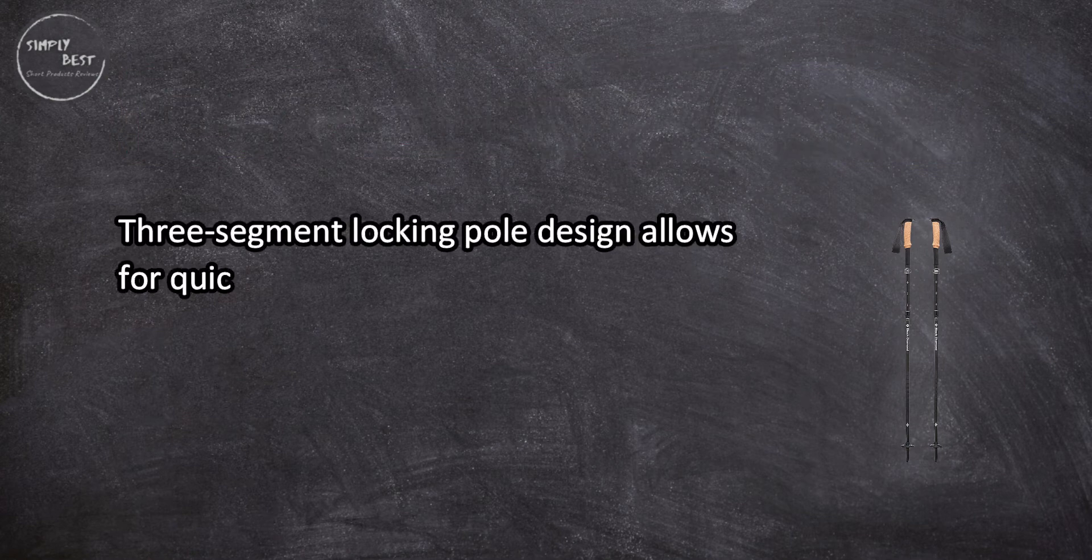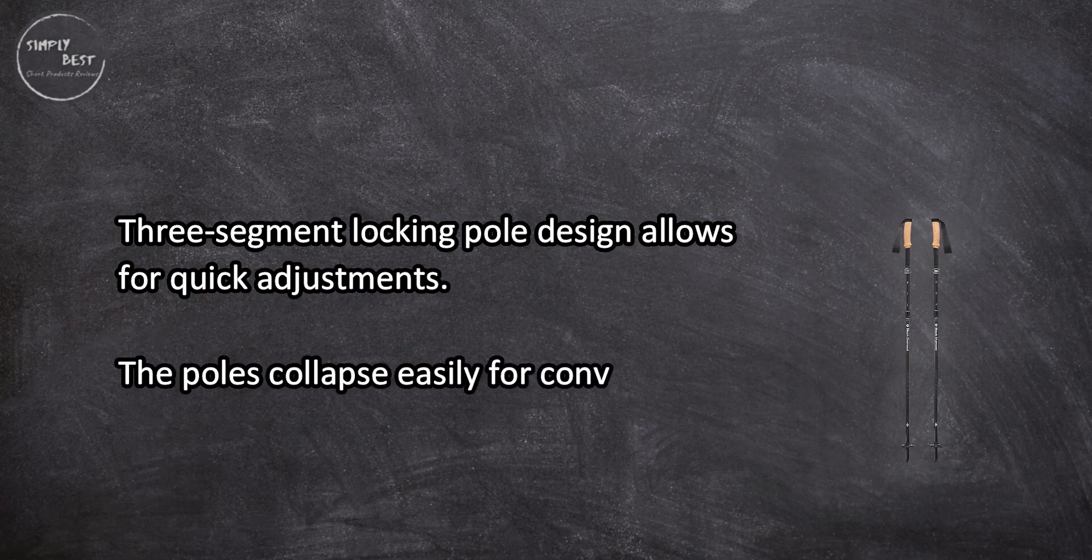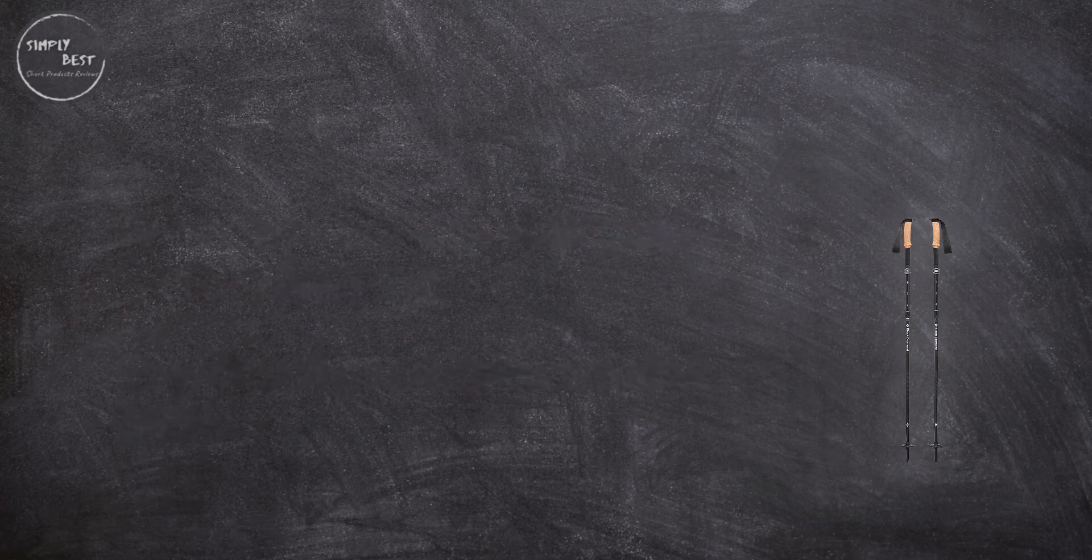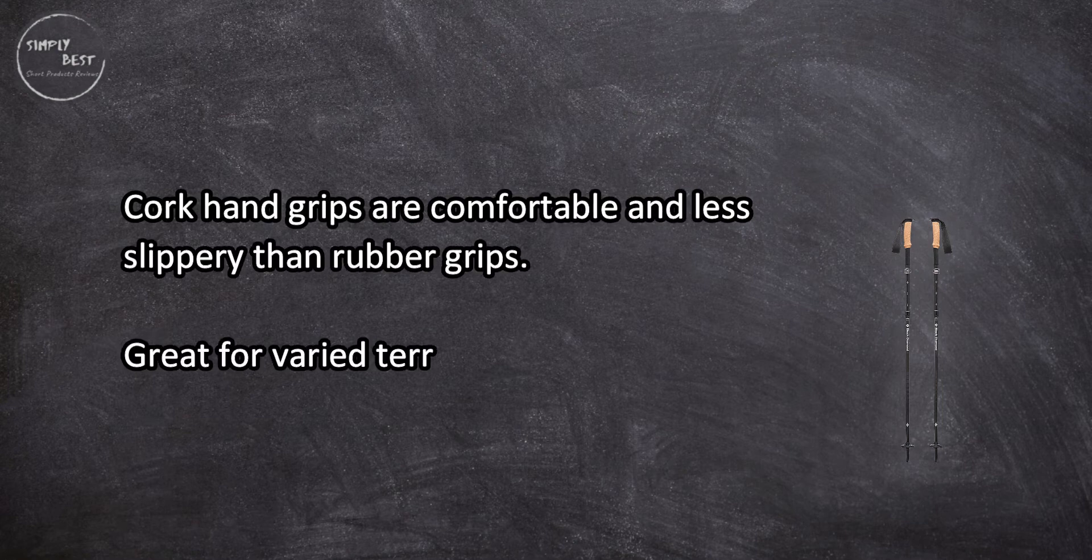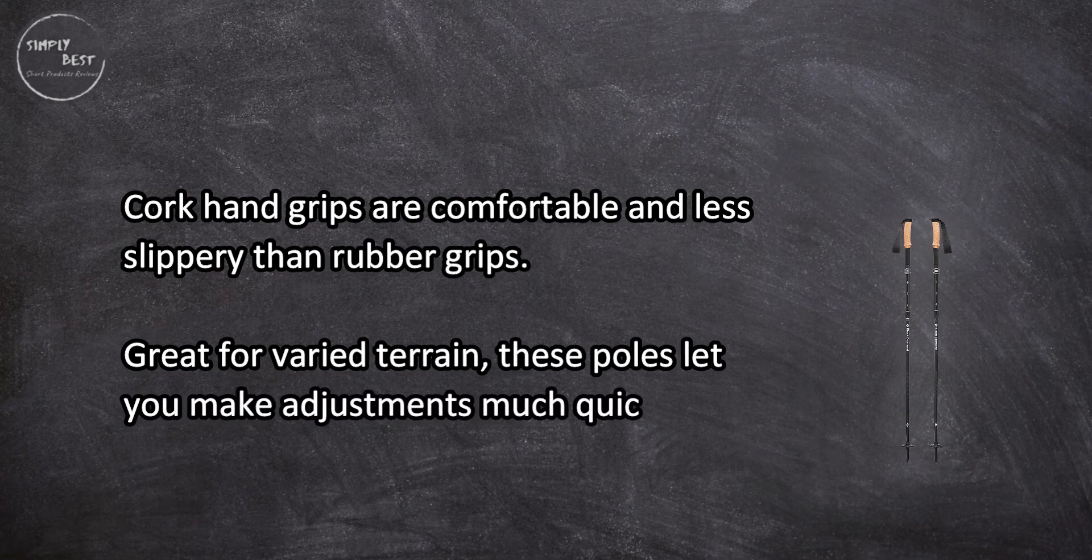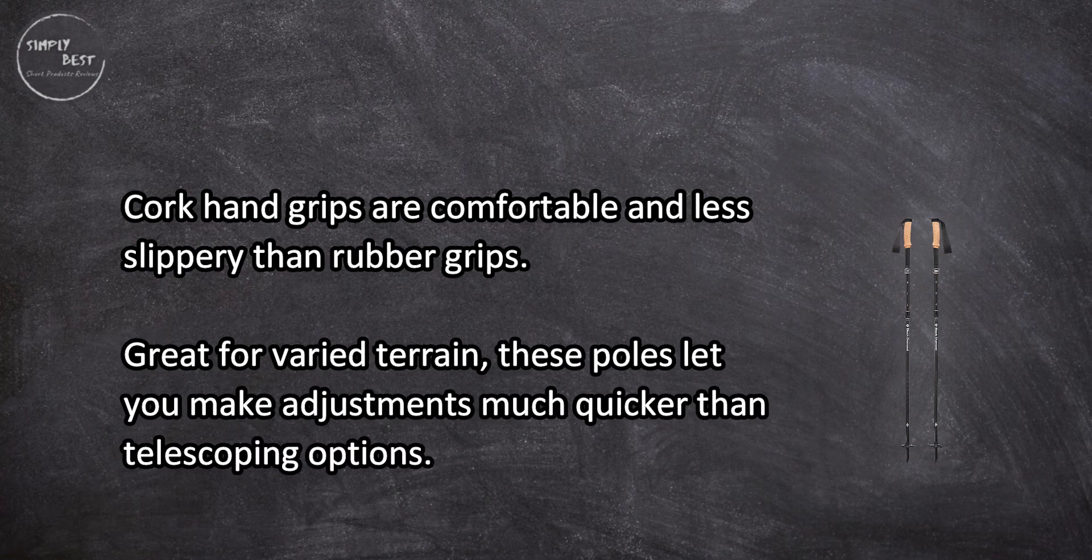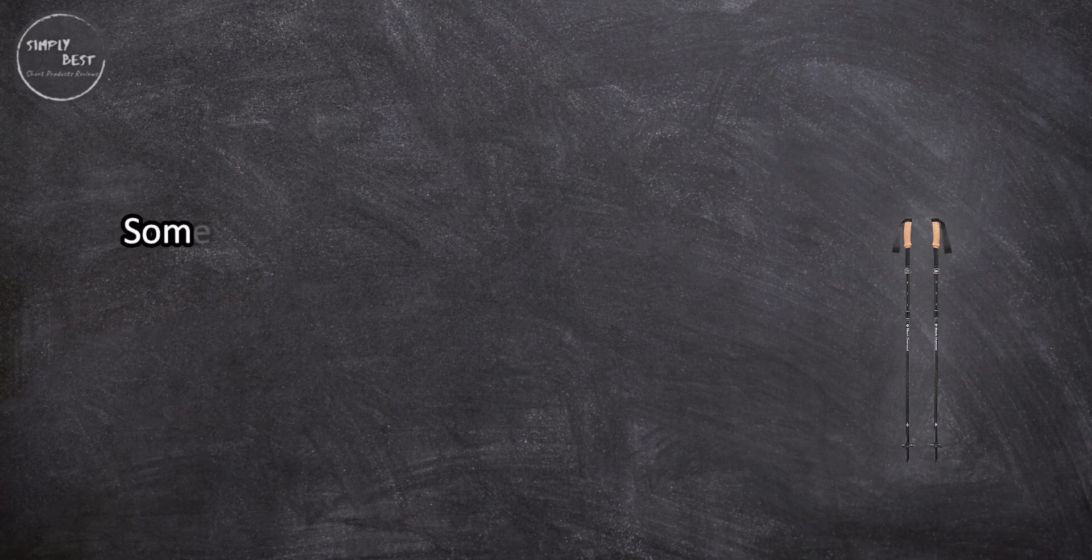The poles collapse easily for convenient travel. Cork hand grips are comfortable and less slippery than rubber grips. Great for varied terrain. These poles let you make adjustments much quicker than telescoping options. Some users felt the folding design makes the poles more vulnerable to wobbling at their joints.